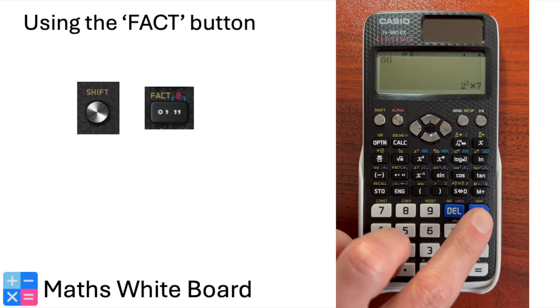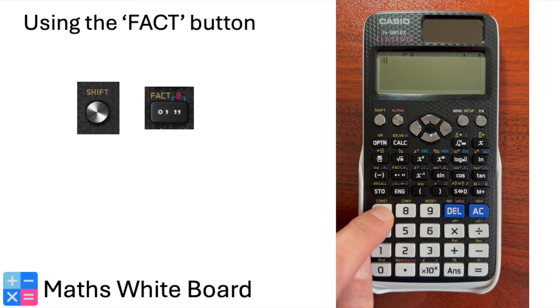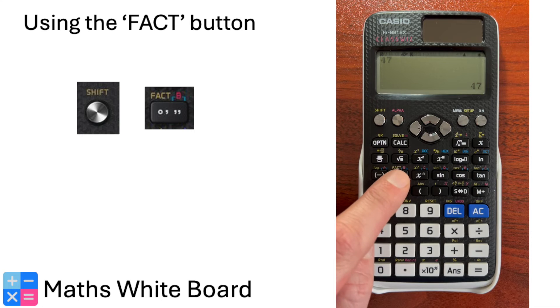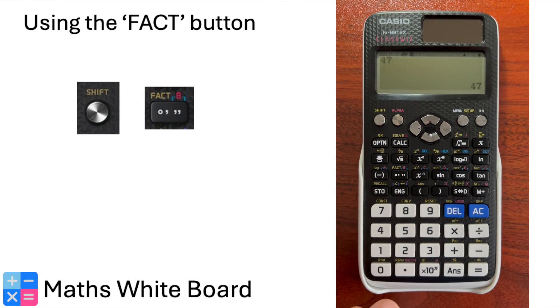If when doing this, the calculator returns the same number, this indicates that the number is prime, i.e., can only be multiplied by itself and one.